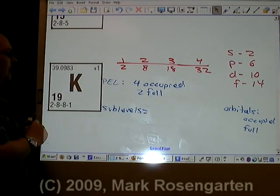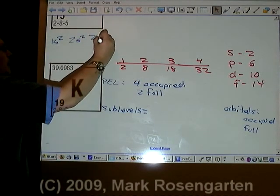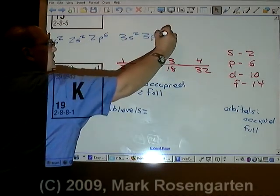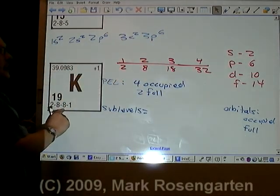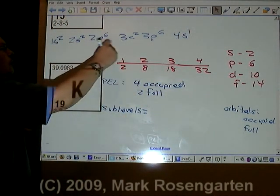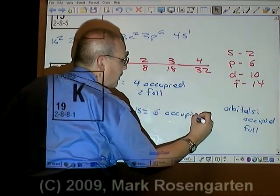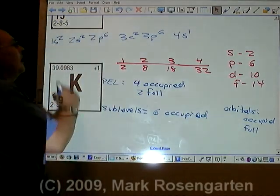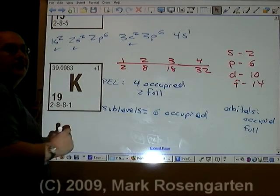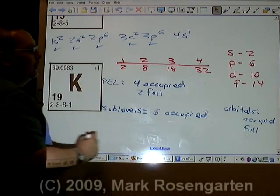The electron configuration for potassium is 1s2, 2s2, 2p6 — that takes care of those eight. Then 3s2, 3p6 — that takes care of those eight. And 4s1. That gives us six sublevels occupied. S needs two to fill it, P needs six to fill it — but the 4s1 sublevel is not full. So only five sublevels are full.